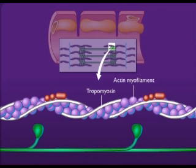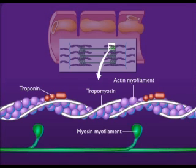Long filamentous tropomyosin proteins lie on two sides of the actin myofilament, covering up the sites where myosin can bind to the actin myofilament. Globular troponin proteins are attached to the tropomyosin.